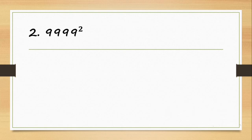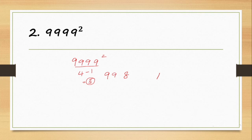The next question is 9999 square. So 9 square is 8, and the gap is 1. Now 9 is going to be 4, 9 is going to be 4, minus 1 — that is 3. Now 8 is going to be 39.